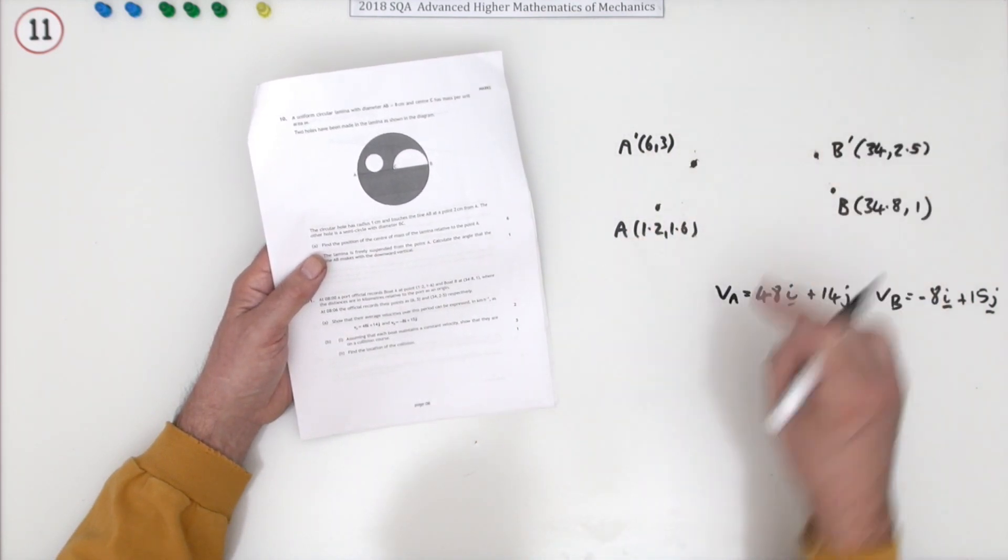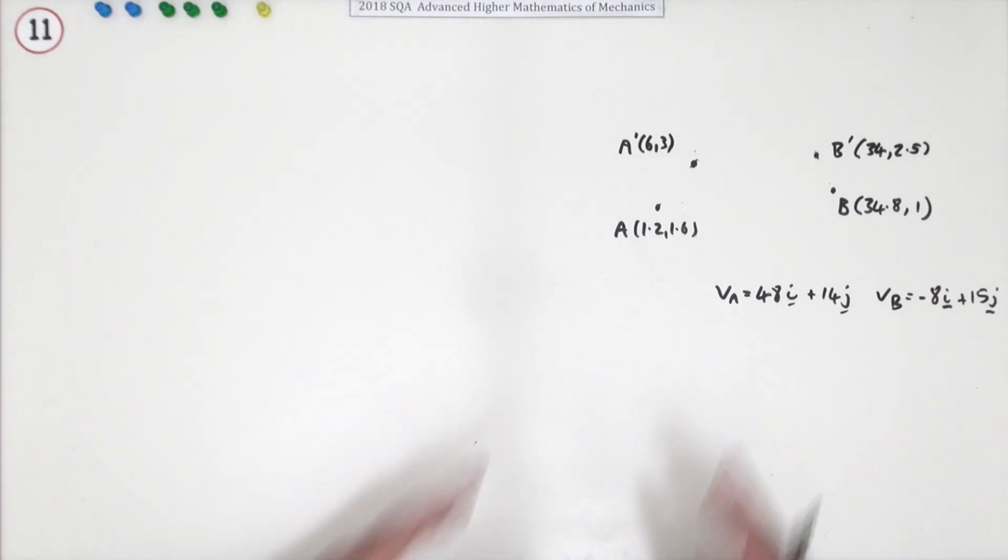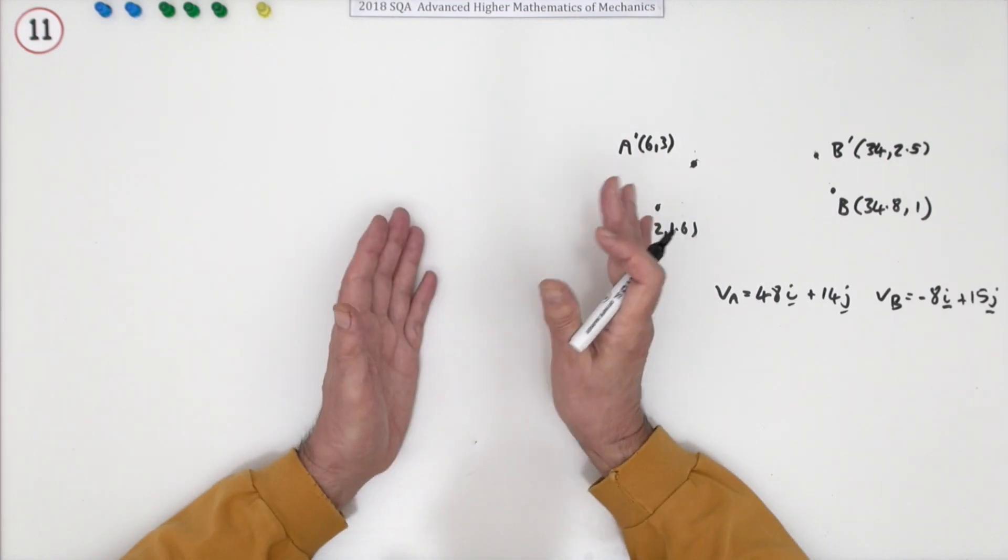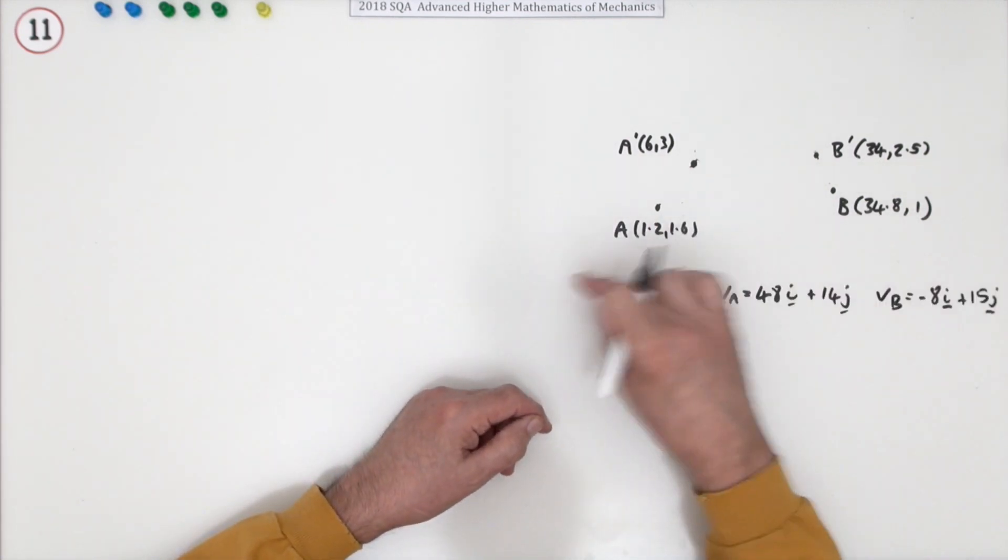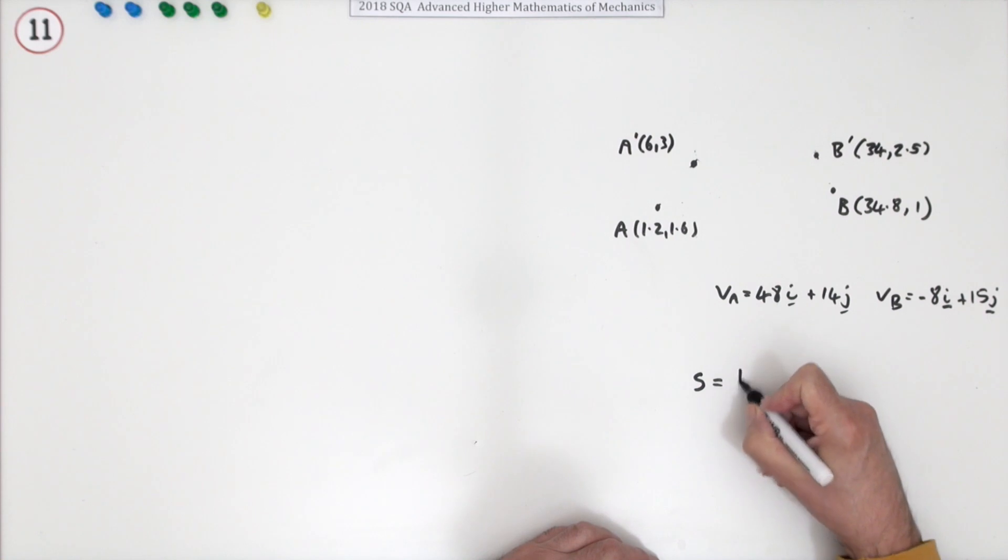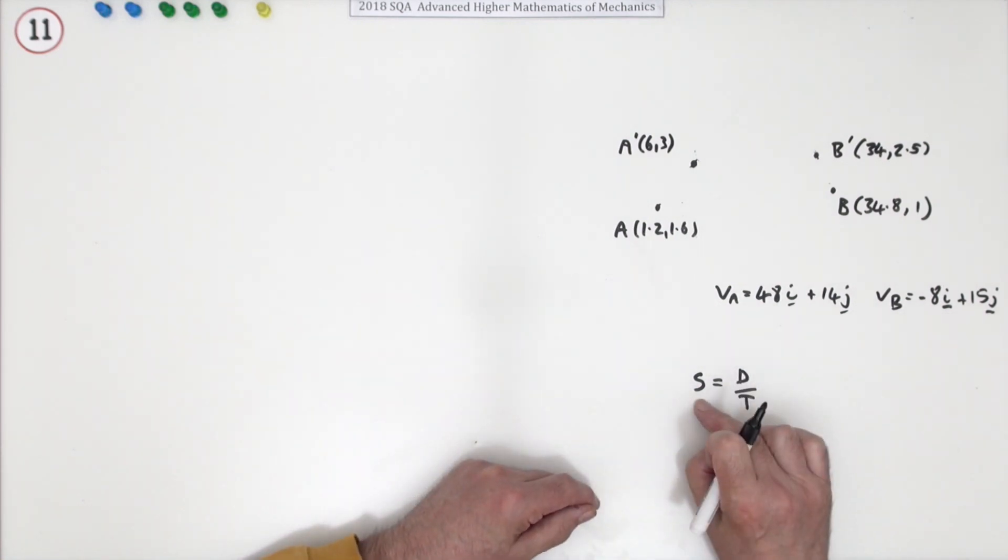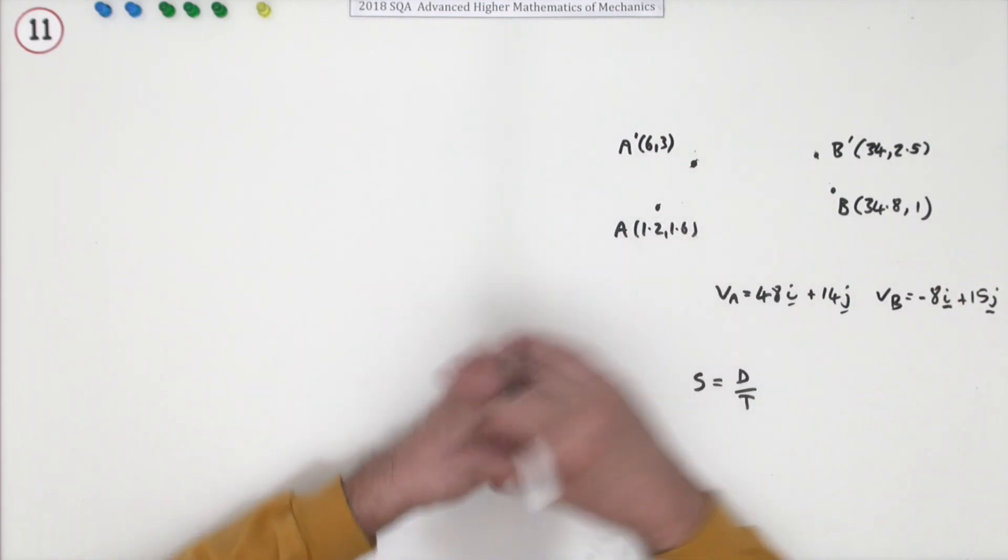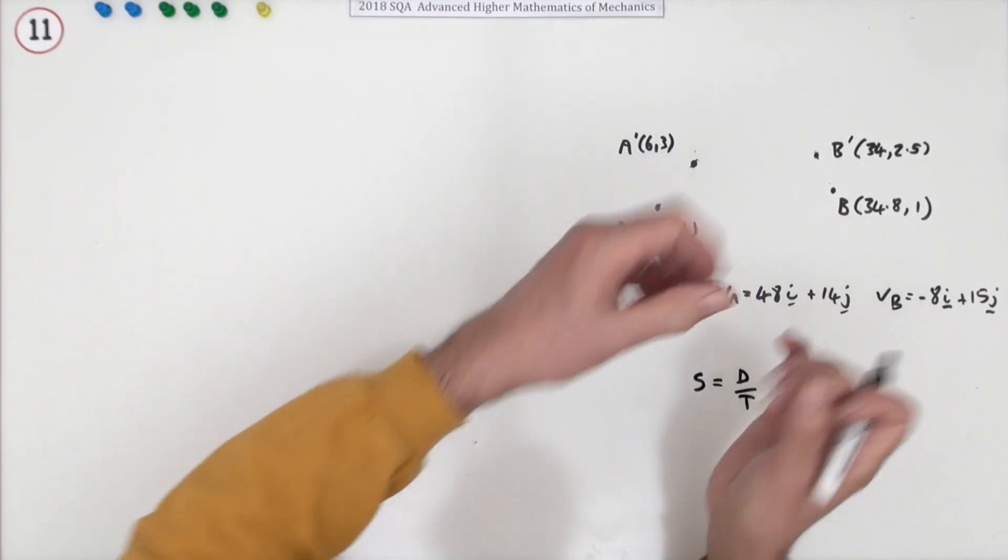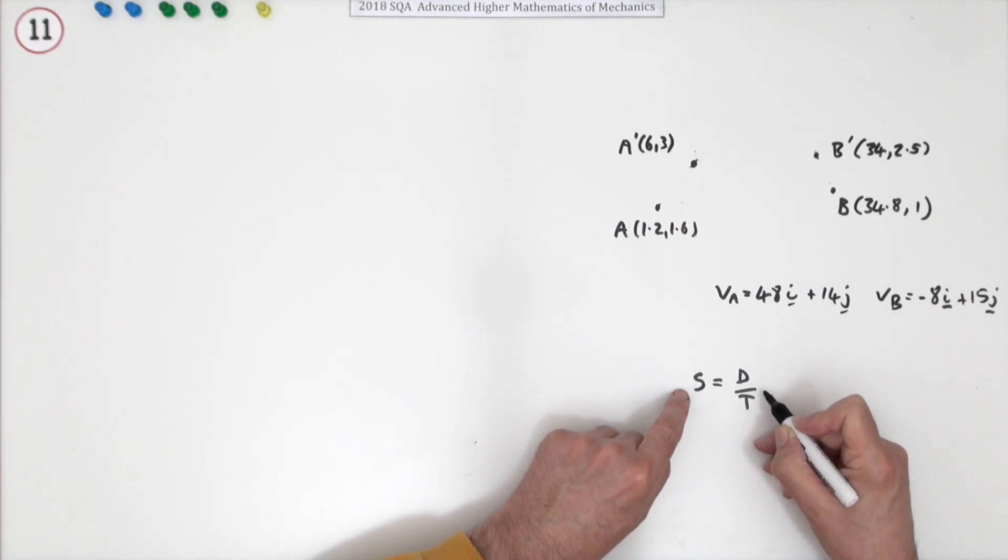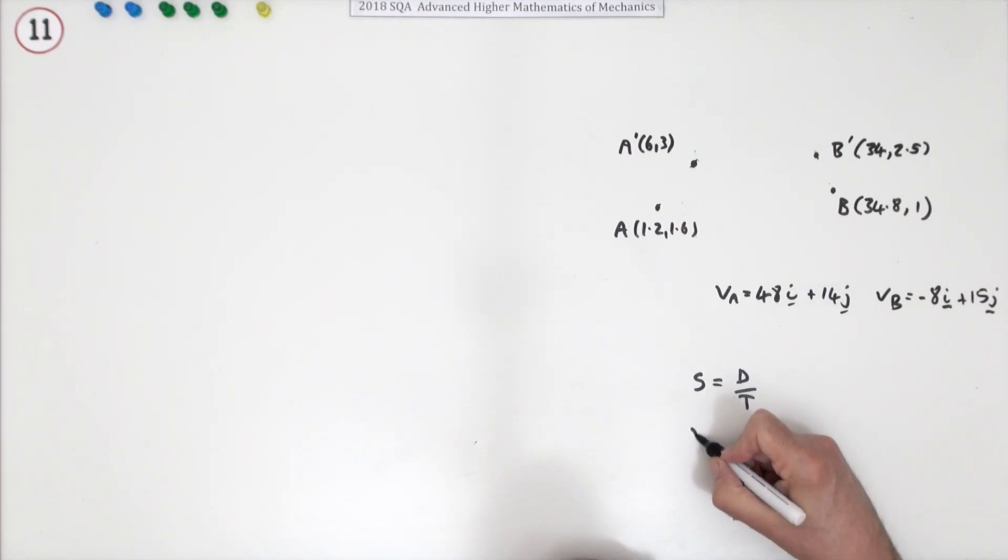First part, just for two marks, show that the average velocities of these two boats can be expressed as these two vectors. Now the vectors just mean that you've got two independent motions combined into one. You could think of their motions in the x direction, just using the normal linear equations for speed, speed equals distance over time, get the x speed and get the y speed and put them back into a vector. Or you could just use vectors in the first place because they hold them both together in the one quantity.